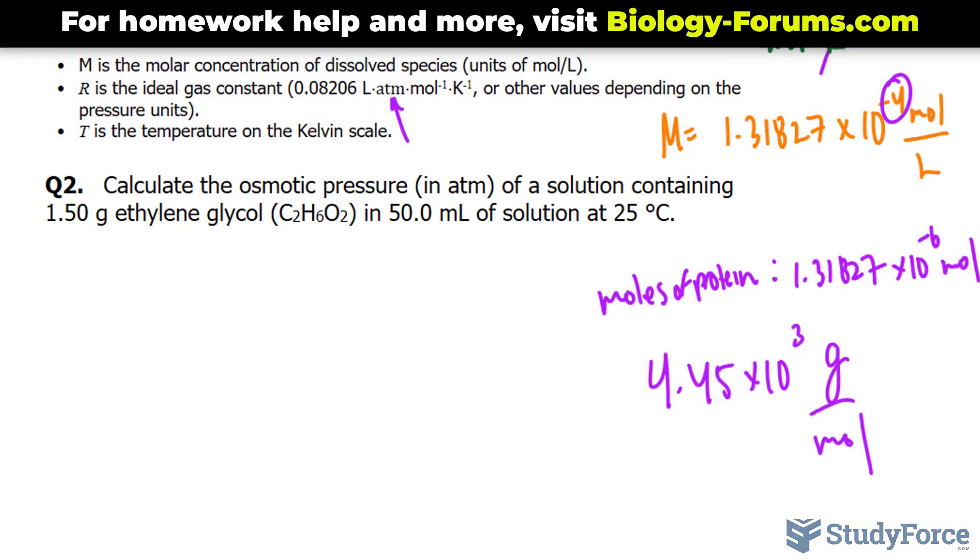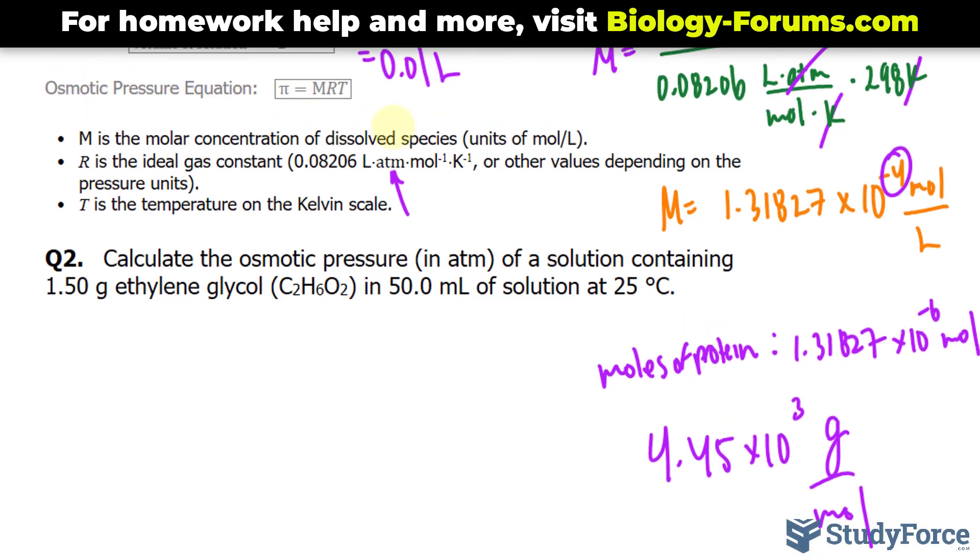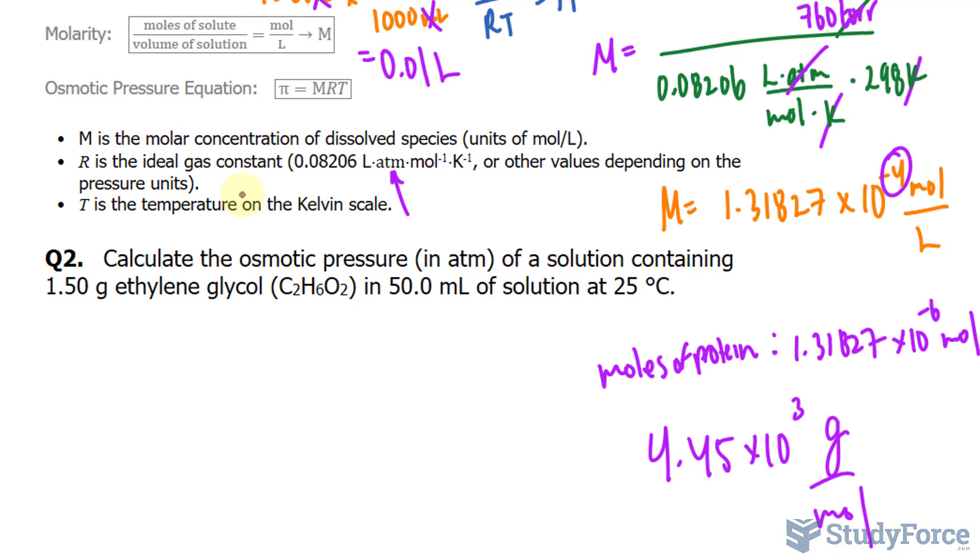Remember the formula for osmotic pressure? We used it in question number 1. Pi represents the osmotic pressure, and you find it by multiplying the molarity times the ideal gas constant R times the temperature in Kelvin.